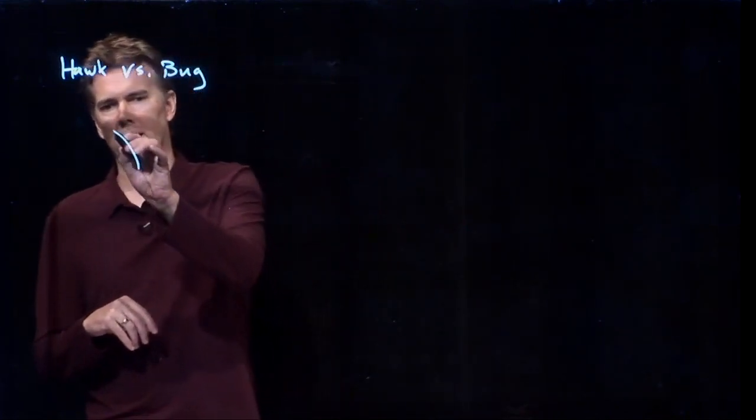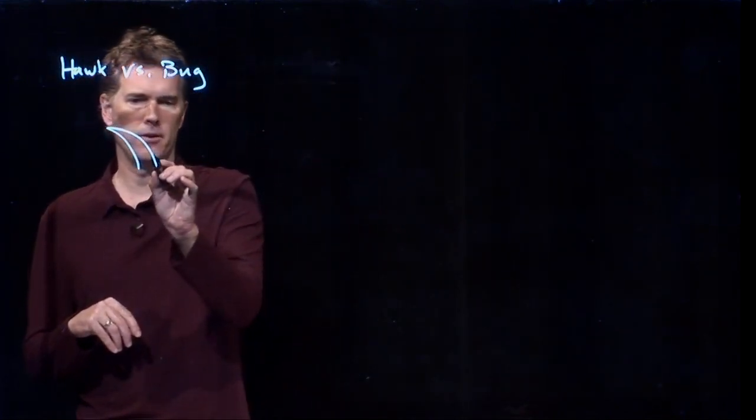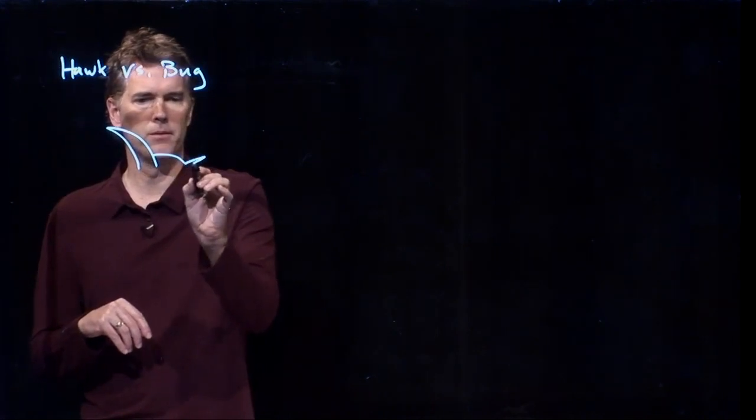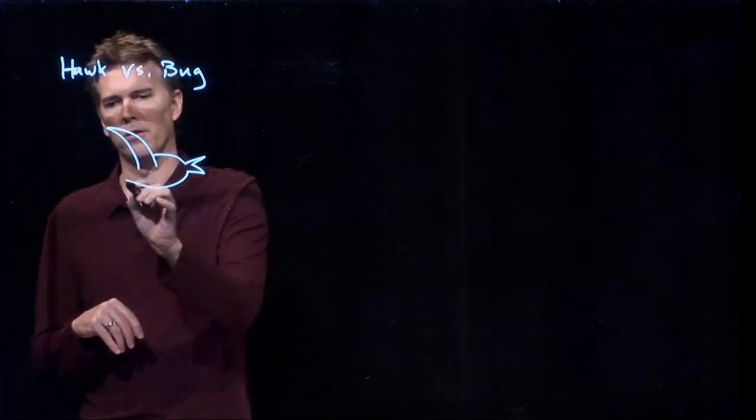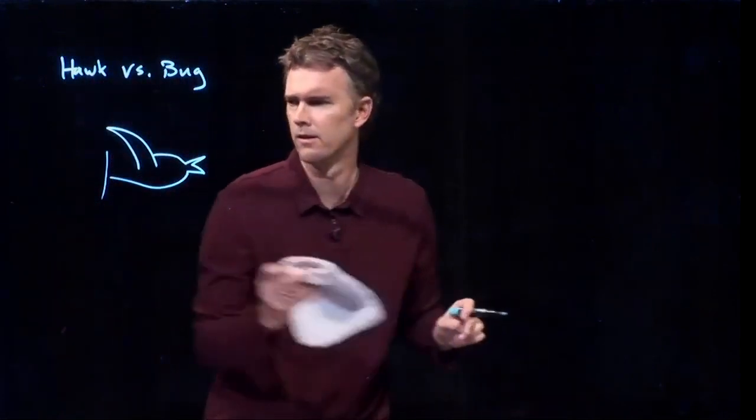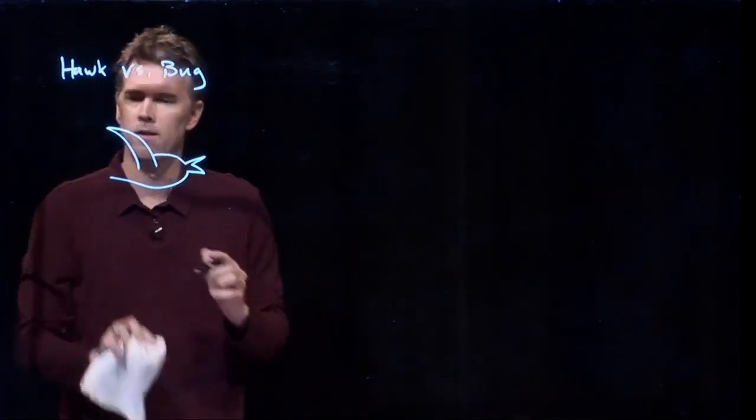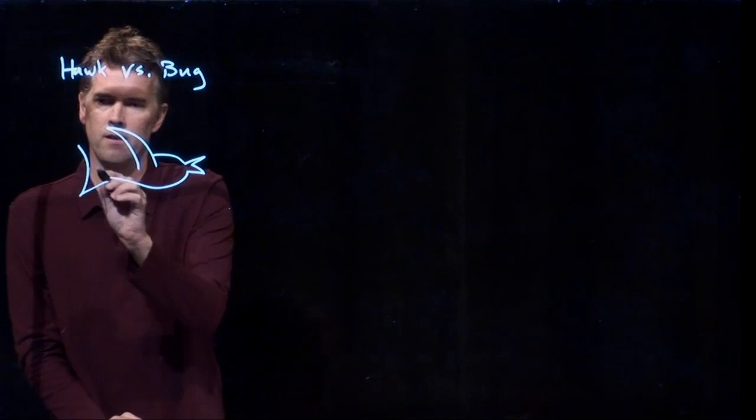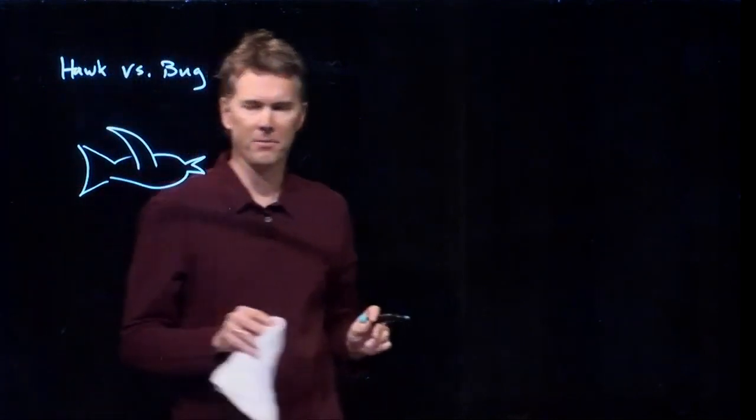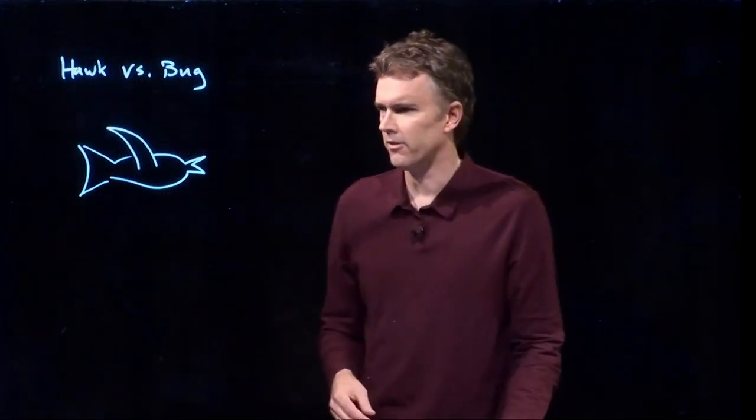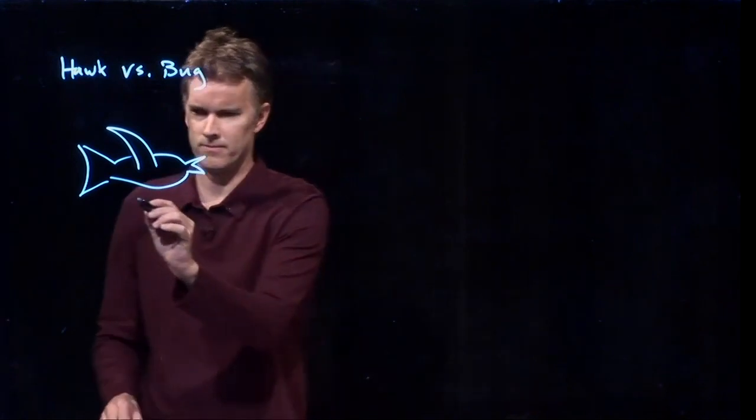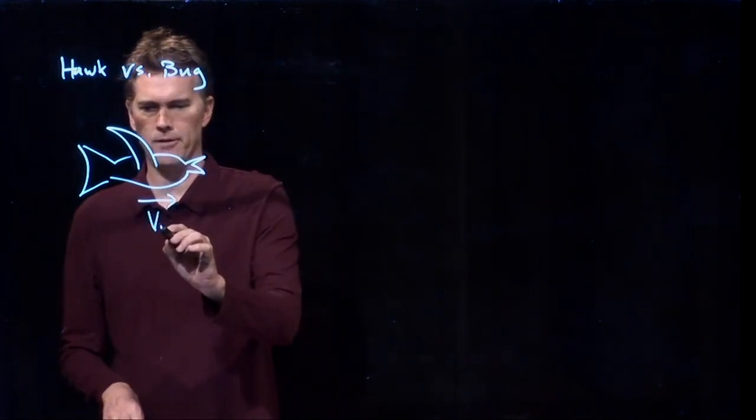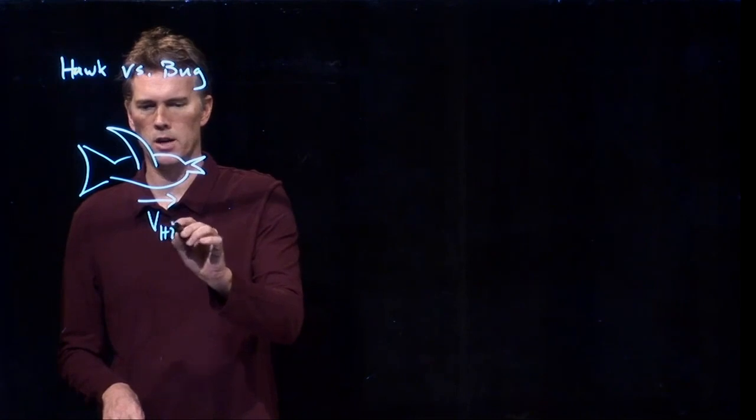We're gonna have a hawk that's flying to the right. I don't know how to draw a bird, but we'll see what it looks like. That's not right. Okay, there's my hawk. It's a fish bird. And it's moving to the right at v-hawk initial.